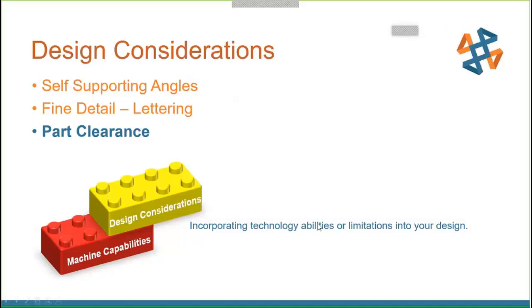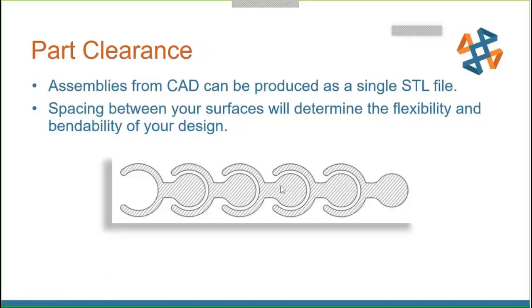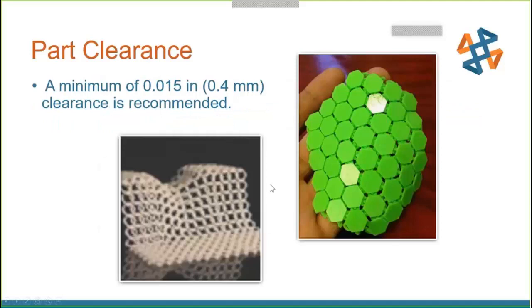For part clearance in assemblies: spacing between parts is crucial as it determines flexibility and bendability of your design. For something like chain mail, maintain a minimum of 15 thousandths clearance — just enough to allow support material to be washed out between the interlocking pieces.